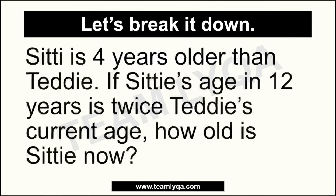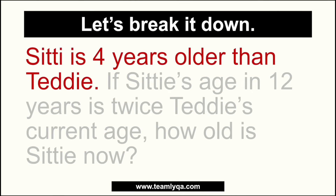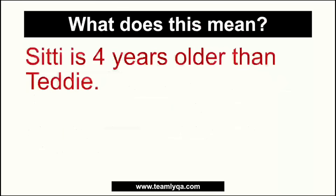The first step is breaking it down into smaller pieces. The first thing to take note of is this statement: 'CT is four years older than Teddy.' A lot of people have trouble figuring out who is actually older — who gets the plus four, who gets the minus four, what do I do? So let's look at the sentence carefully. CT is four years older than Teddy.